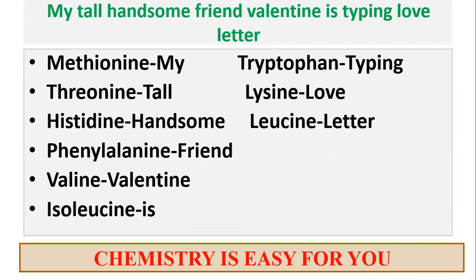The essential amino acids are: methionine, threonine, histidine, phenylalanine, valine, isoleucine, tryptophan, lysine and leucine. The sentence to memorize them is: 'My tall handsome friend Valentine is typing love letter.' Repeat — my tall, handsome friend Valentine is typing love letter. This is extremely simple to memorize.